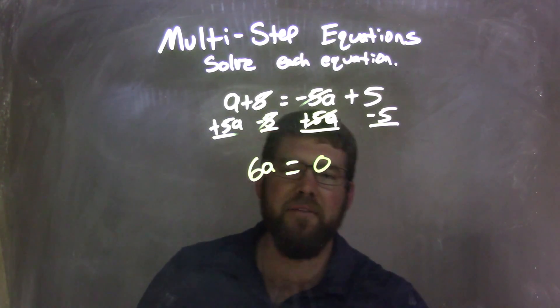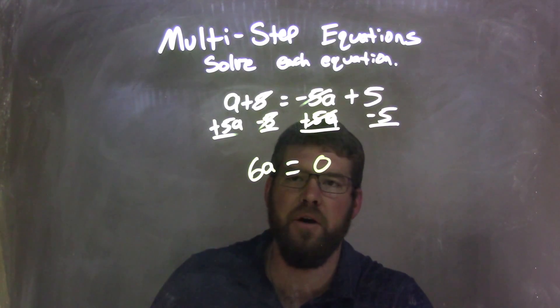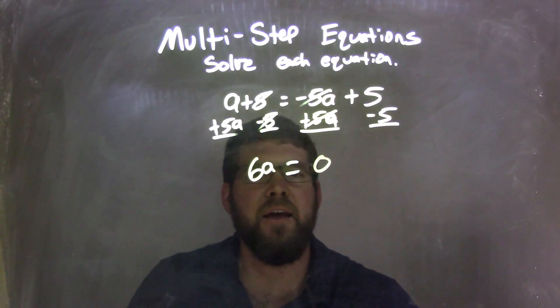We have to write a 0 there, be careful. Don't just write 1, that's wrong. Either write a 0. But now I have 6A equals 0.